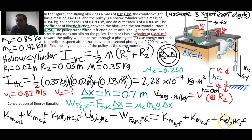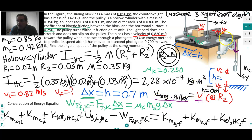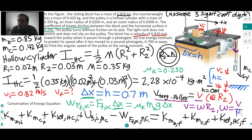For the pulley, the tangential velocity is related to angular velocity by v = ω · R2. So wherever we see omega in the rotational kinetic energy term, we substitute v/R2. This applies both to the initial angular velocity (ω_i = v_i/R2) and the final angular velocity (ω_f = v_f/R2). Now let's move to the next board and fill in the conservation of energy equation.